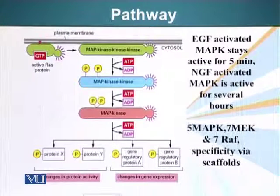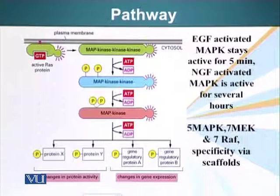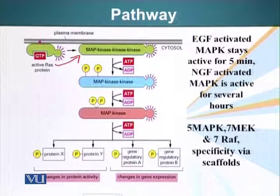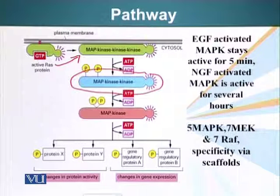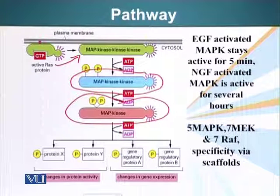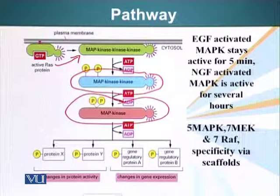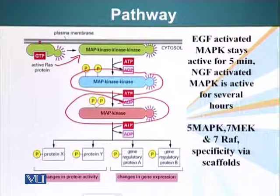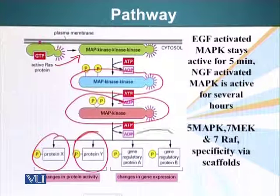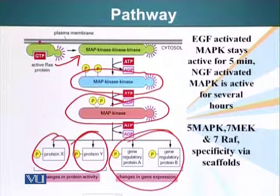I would like to mention here that it is important you know there are alternative names for this system. For example, in some cases RAF is called MAPK kinase kinase kinase, because ultimately it is phosphorylating a protein that will phosphorylate MAPK kinase. And MEK is called MAPK kinase kinase, and MAPK kinase is of course MAPK kinase. So when MAPK kinase is activated, it can result in activation of certain proteins or it can alter gene expression.